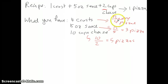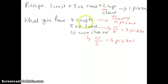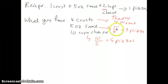So in theory, depending on which ingredient you use up, you'd get either four, three, or five pizzas. The limiting reactant here is clearly the sauce, because using up all the sauce gives you only three pizzas — the smallest number — whereas using up the other ingredients gives you more. The ingredient that produces the least amount of product is what we define as the limiting reactant.